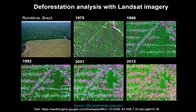The deforested land and urban areas are in purple. Healthy vegetation appears in green. Systematic cutting of forests started in 1975 along the roads and then spread out to create this fishbone pattern that begins in the image of 1986. By 2012, the deforestation has spread out to encompass large areas that were previously rainforest.